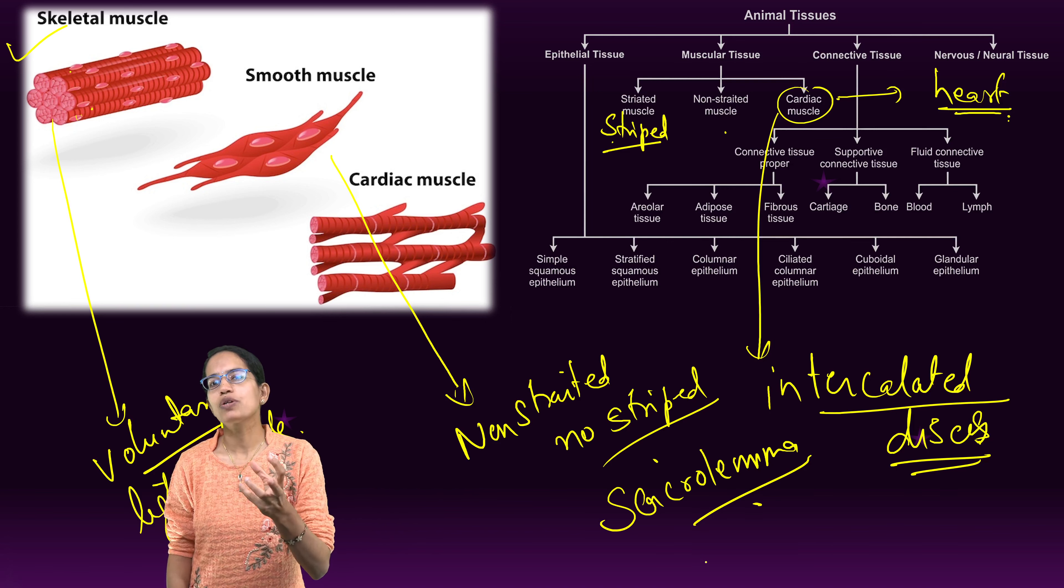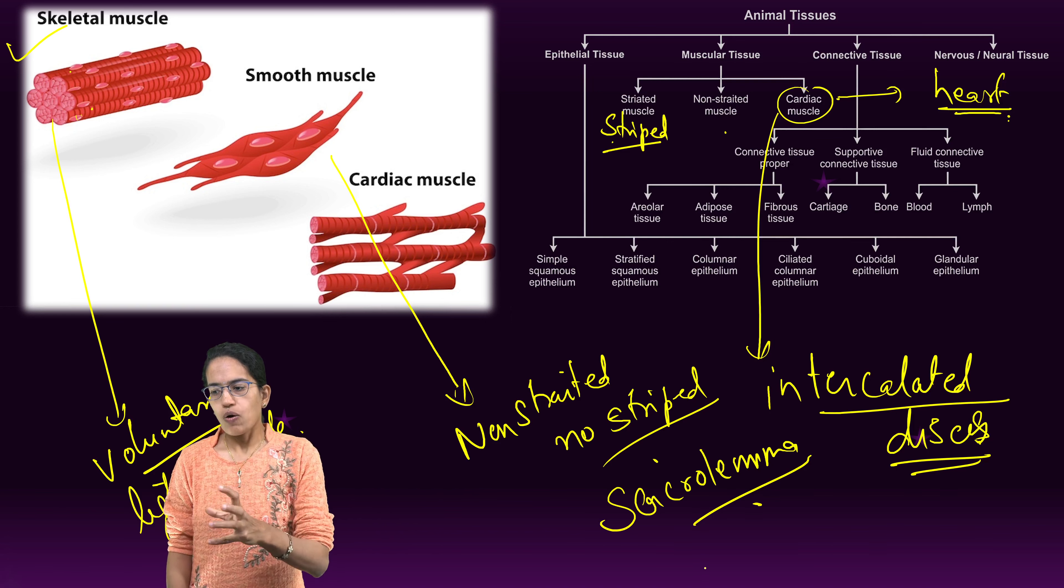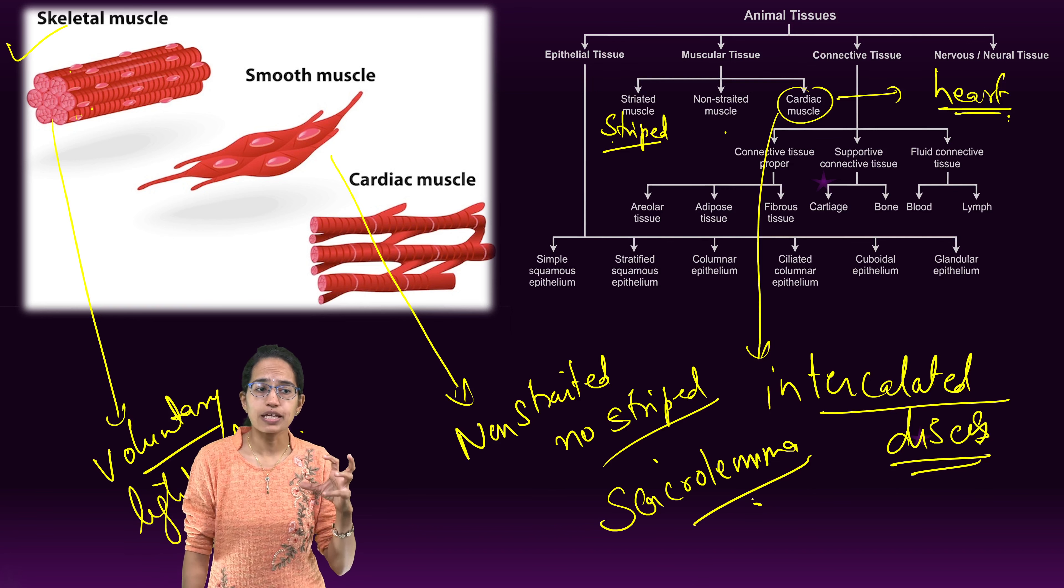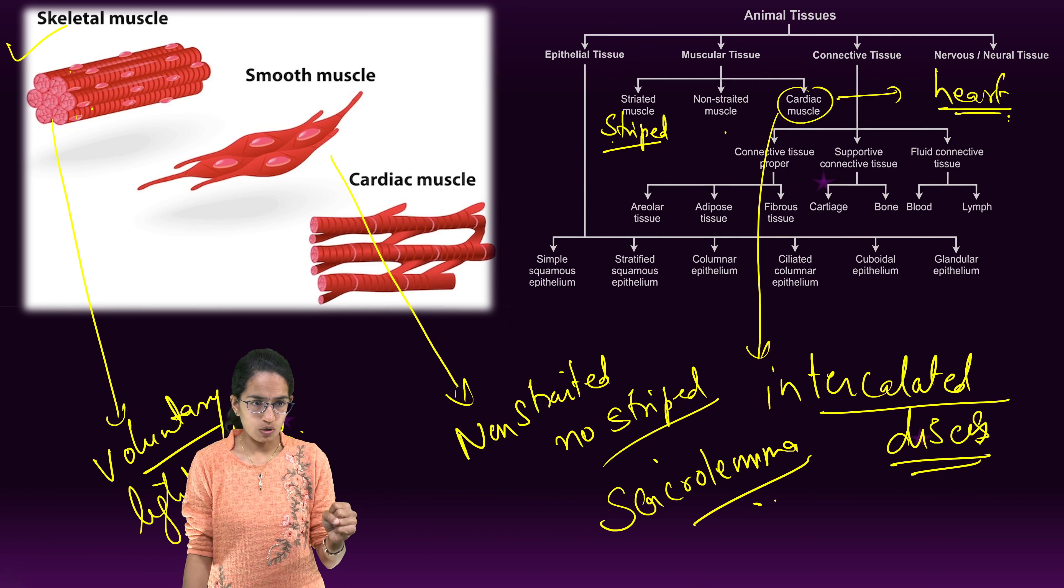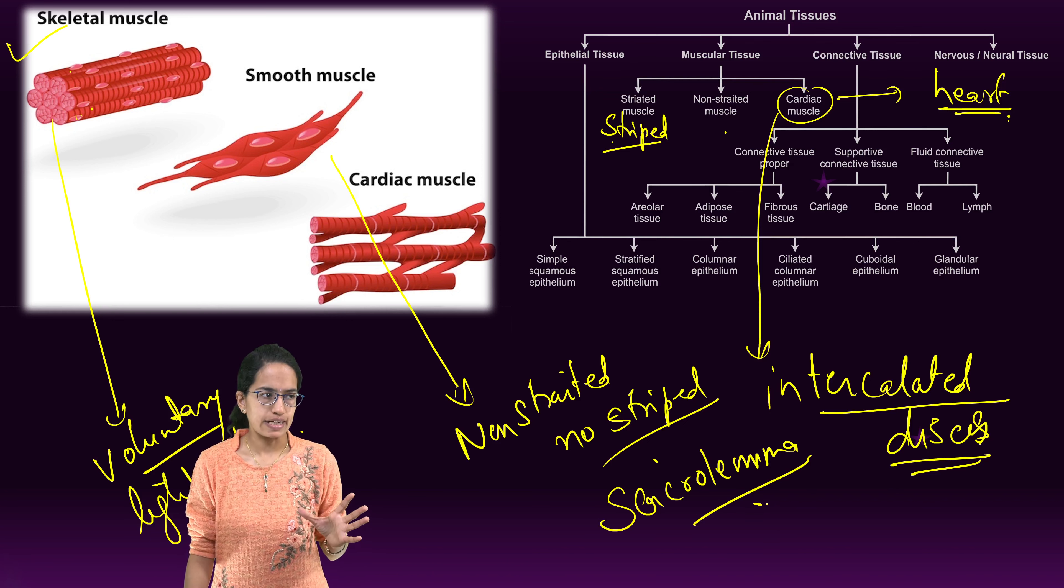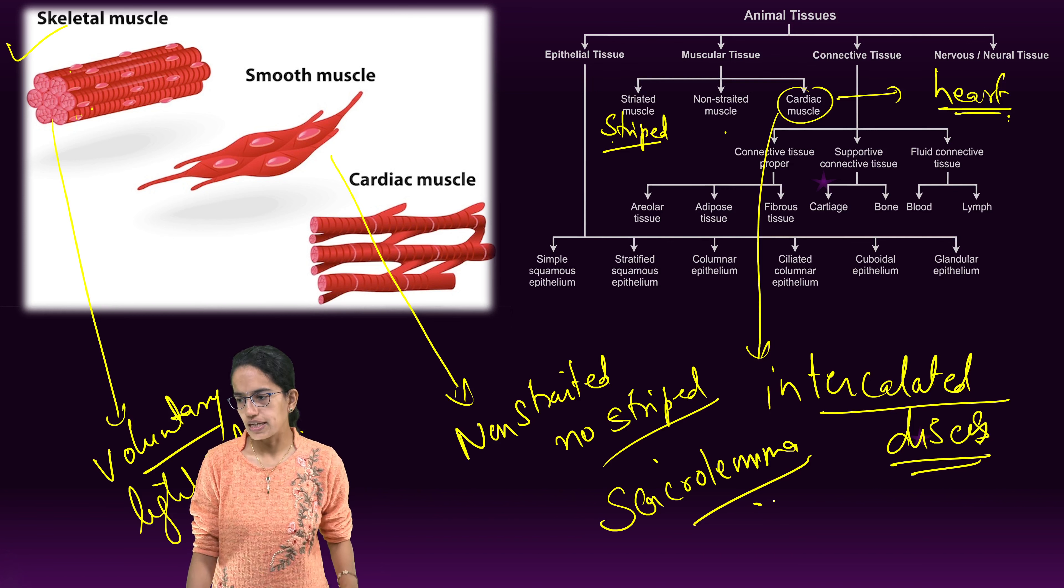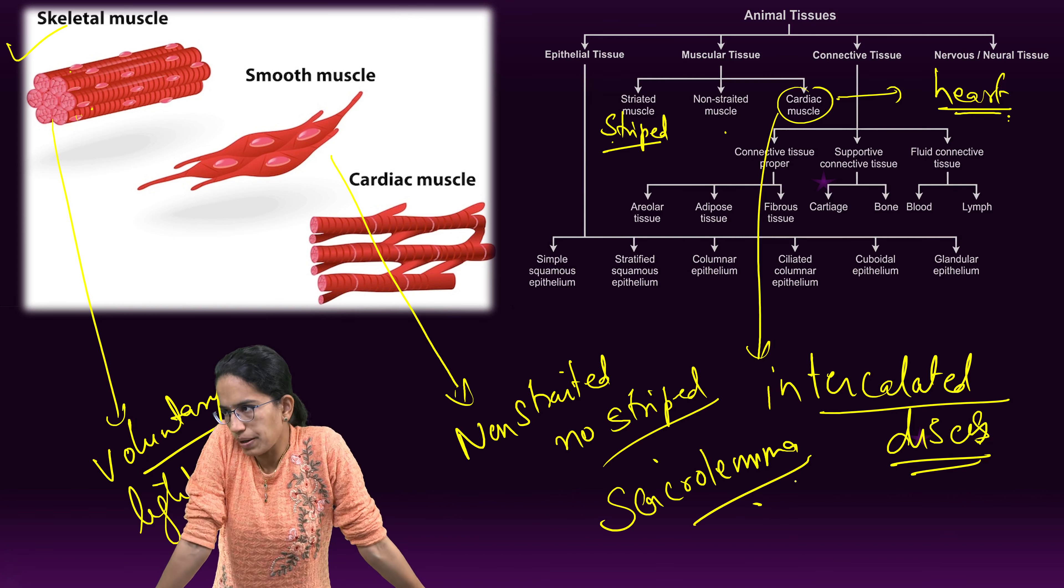Unstripped muscles have the highest ability to remain contracted because they are involuntary, followed by cardiac, followed by skeletal. That is a very important thing to remember.